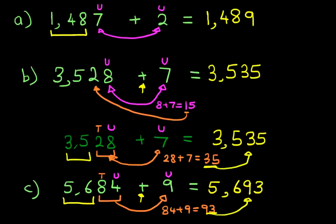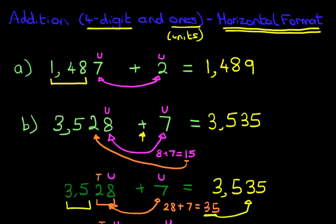So there are two slightly different methods, but effectively, you are just counting the units with another unit. If it equals ten or more, then you can use the tens as well. So have a practice with a few numbers. And that is how we add four-digit numbers and ones using the horizontal format.